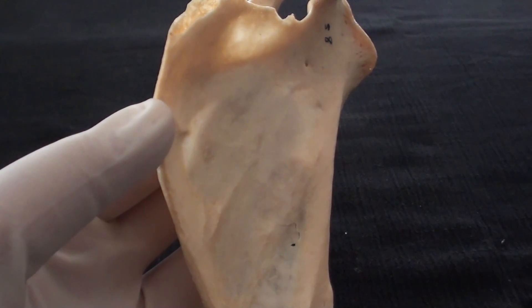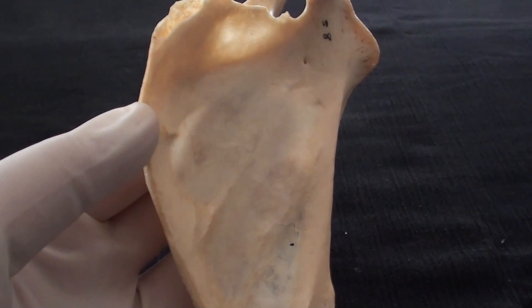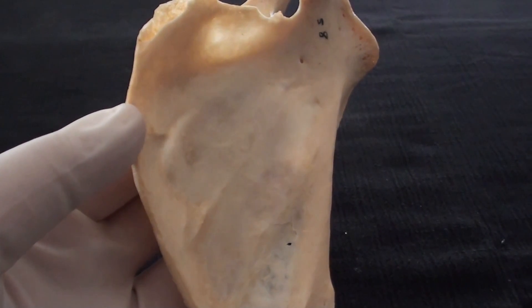These four muscles with their flat broad tendons actually reinforce the glenohumeral joint that would otherwise rely on a very few ligaments.